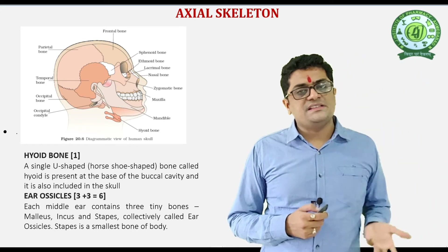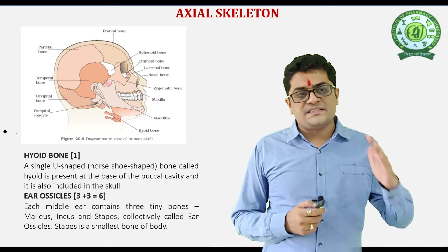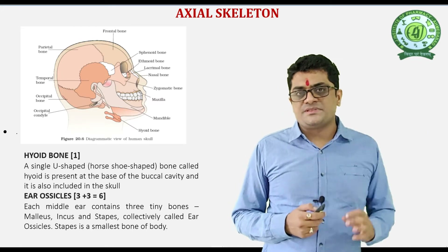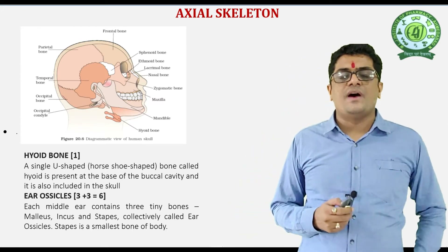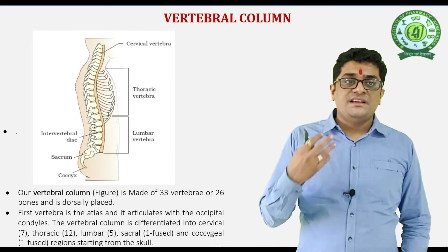The ear ossicles are 3: malleus, incus, and stapes. The stapes is the smallest bone of our body.